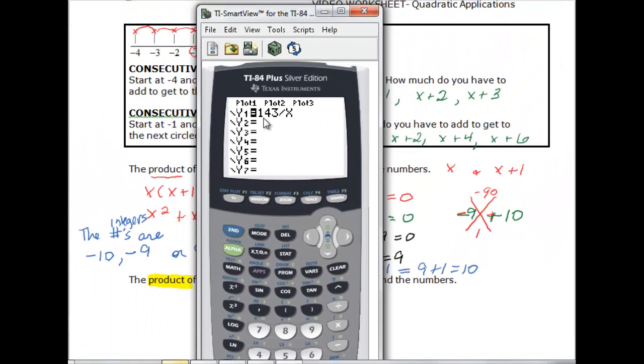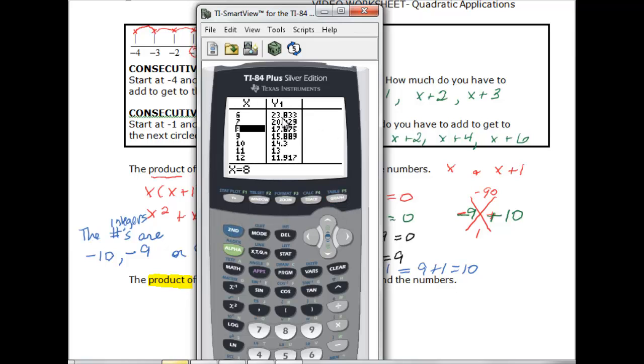And I'm going to go to y equals and I put my 143 divided by x. The trick is I have to look for consecutive odd integers, but when I go to my table and I look in here and there's a whole bunch of decimals anyway, but when I get down to 11 I see that it's 13. 11 and 13 would be 143 and those are consecutive odd integers so those must be my values.